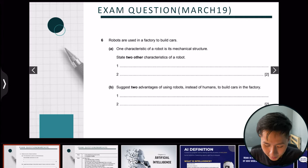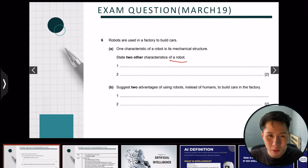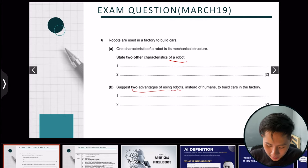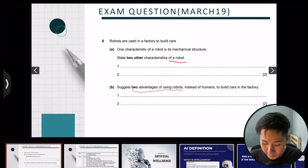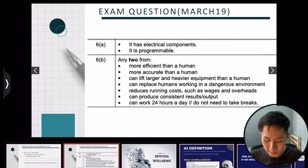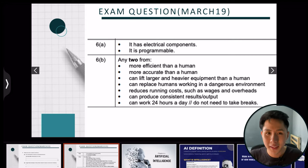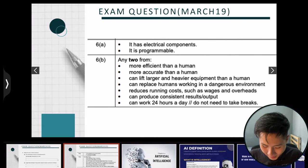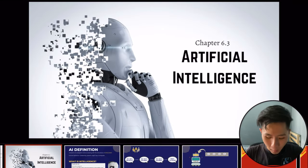There's a past year exam question asking about two other characteristics of a robot and two advantages of using robots. Remember: a robot has mechanical structure, electrical components, and must be programmable. Advantages include being more accurate and safer. These are the types of answers to write in your IGCSE exam.